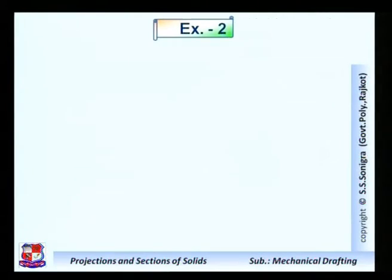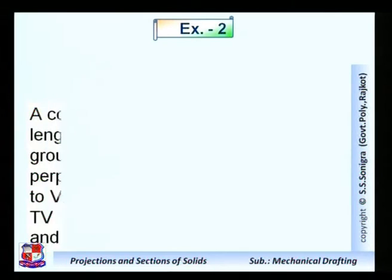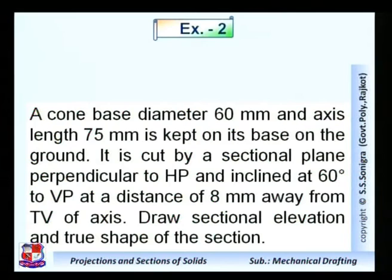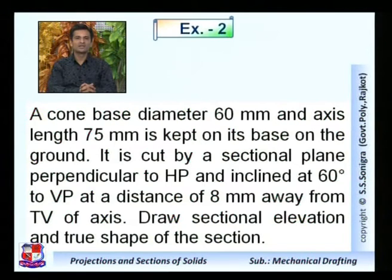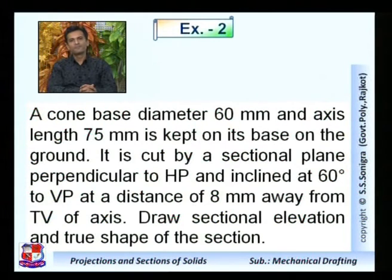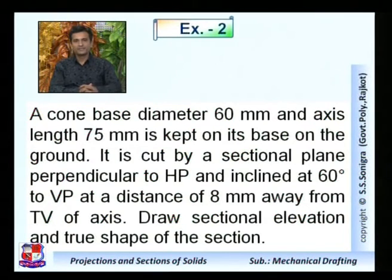Problem number two: a cone with base diameter 60 mm and axis length 75 mm is kept on its base on the ground. It is cut by a sectional plane perpendicular to HP and inclined at 60 degrees to the vertical plane, at a distance of 8 mm from the top view of the axis. Draw the sectional elevation and true shape of the section. The solid is a cone resting on its circular base, so first draw its top view — a circle — and front view — a triangle.